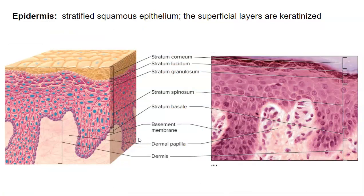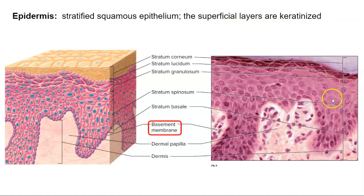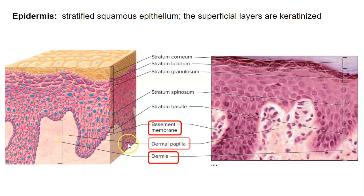Let's look at the epidermis more closely. Remember, that's stratified squamous epithelium, and the superficial layers are keratinized. Here's the keratinized layer up here — this is all epidermis. Remember, we have the basement membrane here, which separates the epidermis from the dermis. These projections that project up into the epidermis are called the dermal papilla, and those determine your fingerprints.